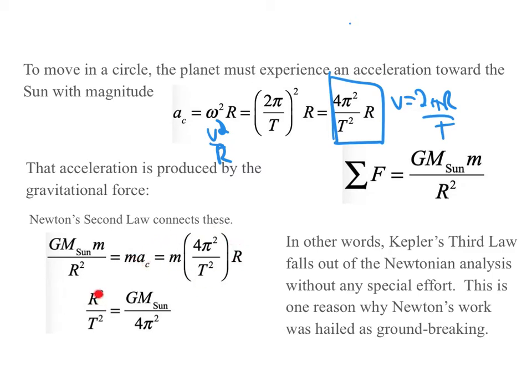And so we end up with r³ over t² when we solve these over. We bring an r² up this way, and we get r² over t², r³ over t² is G times the mass of the sun over 4π². And of course all of those things are essentially constant. So that's Kepler's third law.